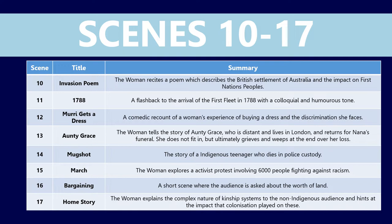Let's run through some brief summaries of each scene we're going to look at today. The first is Invasion Poem, where the woman recites a poem describing British settlement of Australia and the impact on First Nations people — quite graphic. We then shift to scene 11, 1788 — the year the first fleet arrived in Botany Bay. This is a flashback to that arrival, with a more colloquial and humorous tone. Very, very short scene.